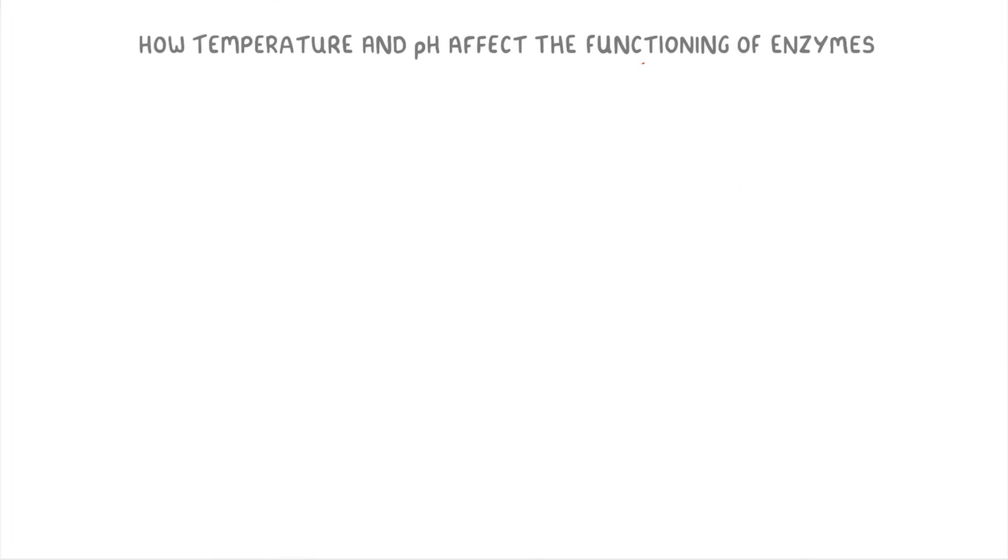In this video, we're going to look at how temperature and pH affect the functioning of enzymes, and therefore the rate of enzyme-controlled reactions. Let's start with temperature.